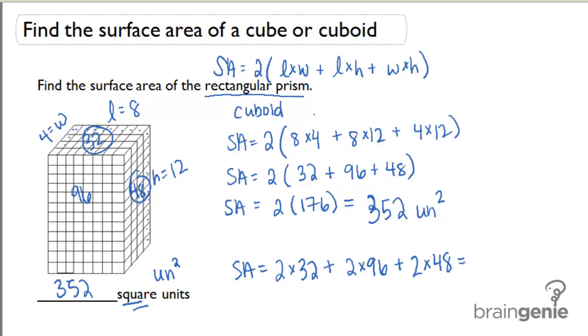And if I multiply and add these numbers out, I would get 352 square units as well. So really, both ways give you the same answer for finding the surface area of a rectangular prism or a cuboid.